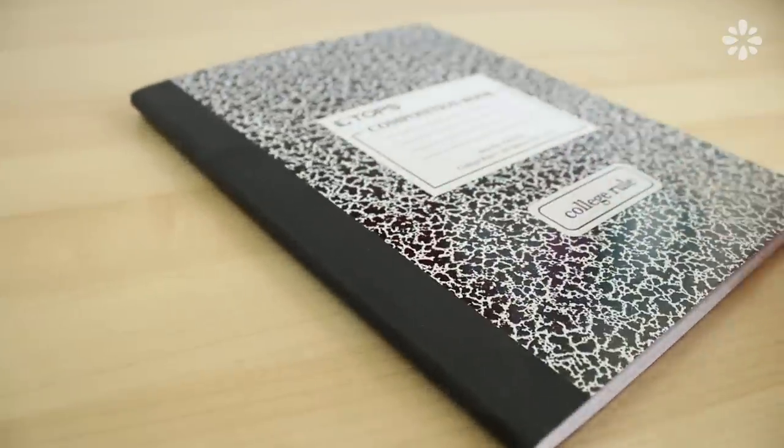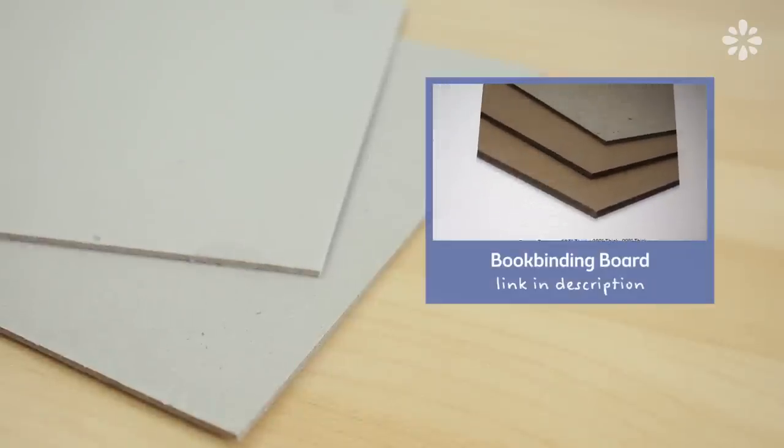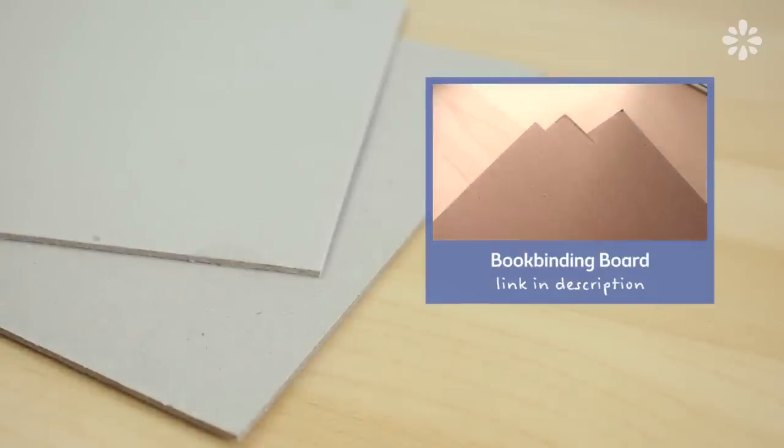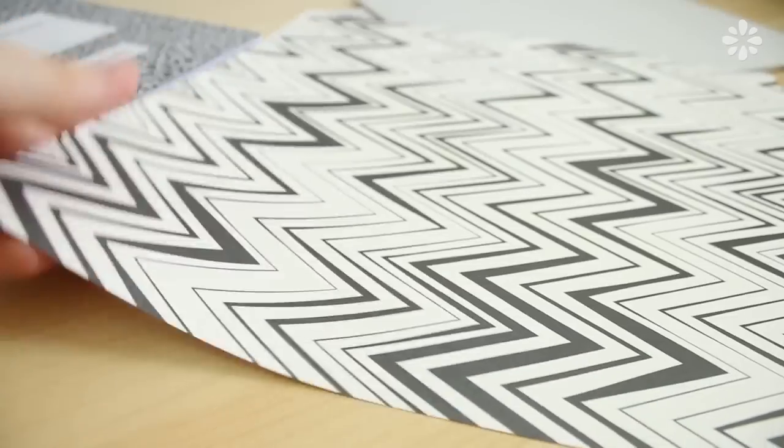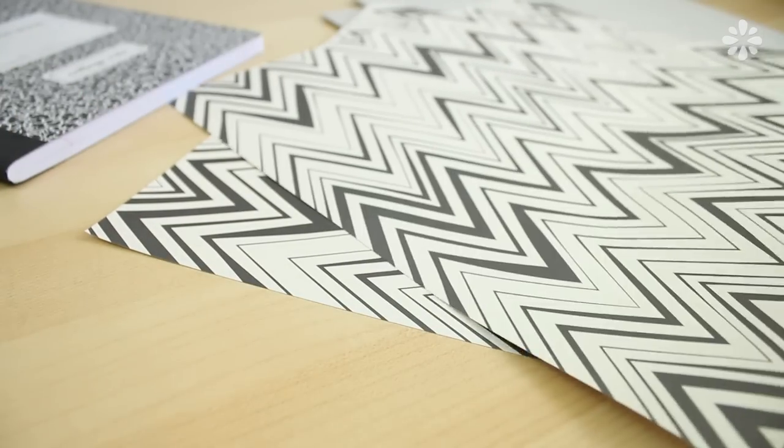I'm going to start out with a standard composition notebook and for the hardcovers I'm using chipboard. If you don't know where to find board for book projects check out this video here and it will show you some sources where you can find the board and also some things you can recycle. To add some design to the covers I'm going to wrap them in this cardstock paper but you can also choose to leave the board blank.